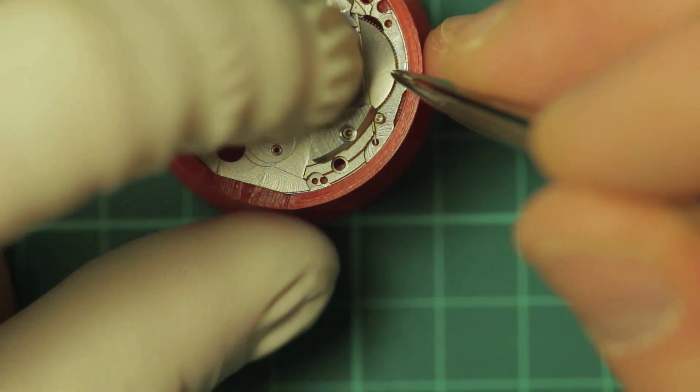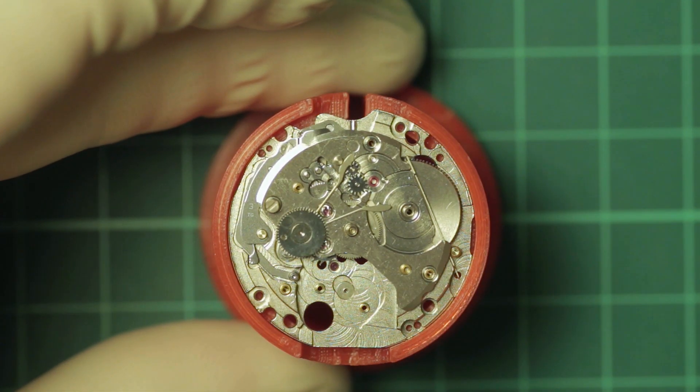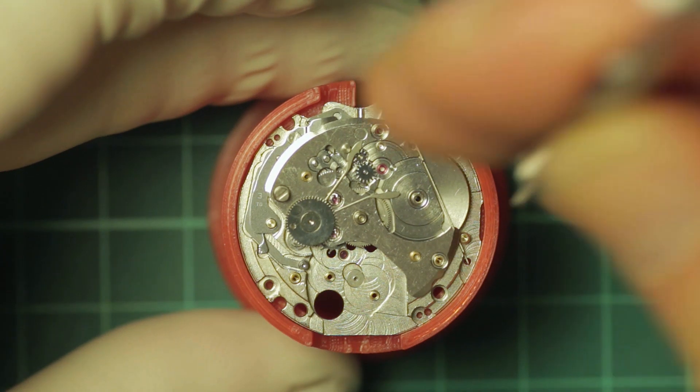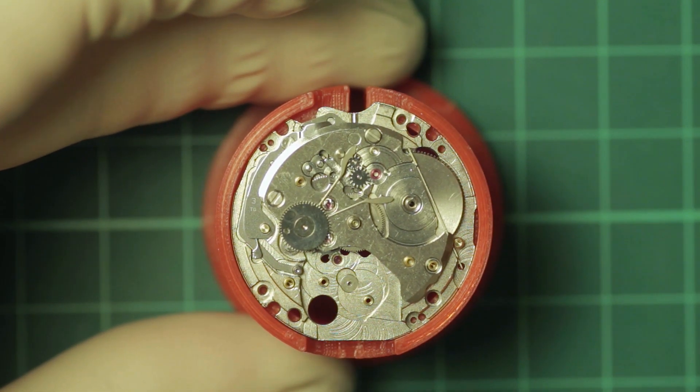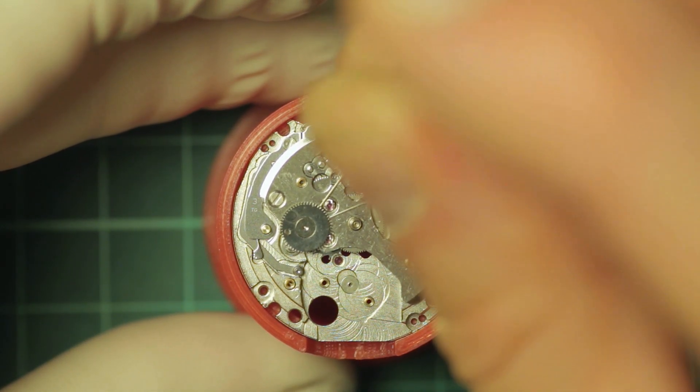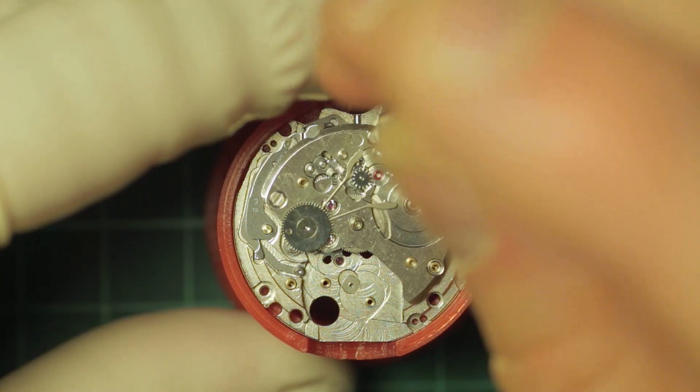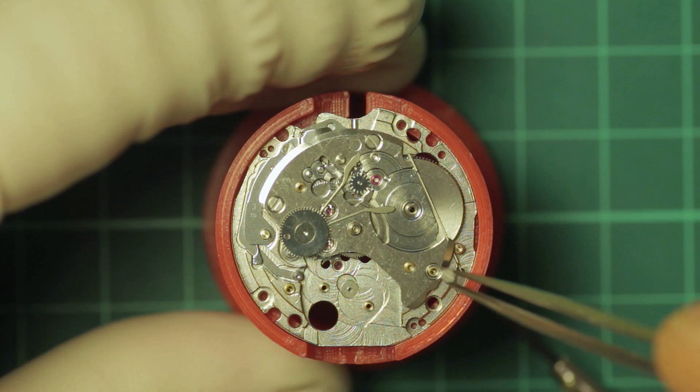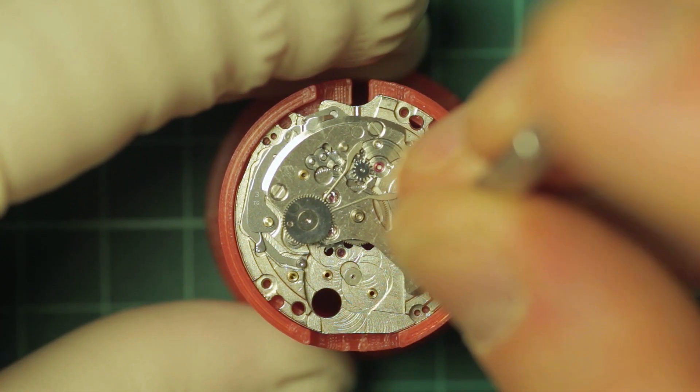And one thing about most Seiko movements is they are so well made that this part just tends to drop into place. And anybody who's ever rebuilt a movement where the bridge tends to encompass the entirety of the barrel and train knows that it can sometimes be a little bit challenging getting everything aligned, and it's something you rarely have a problem with with Seiko movements. Things just tend to drop into place very, very nicely indeed, and then the bridge is secured by the three screws.